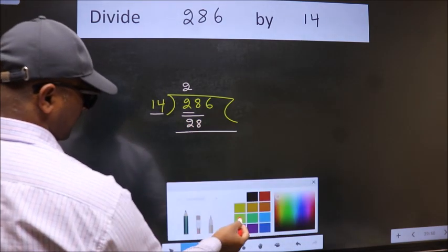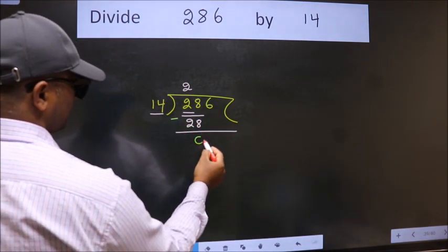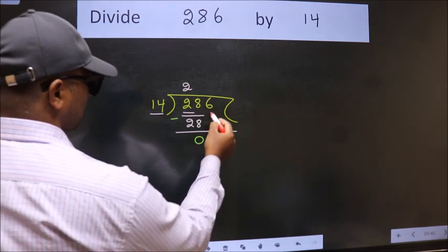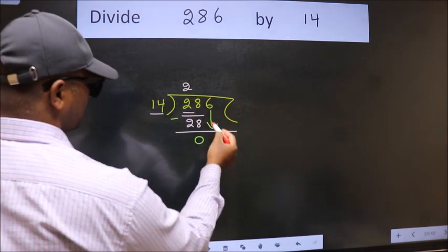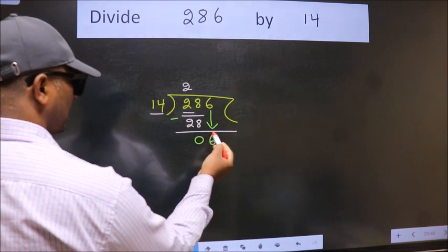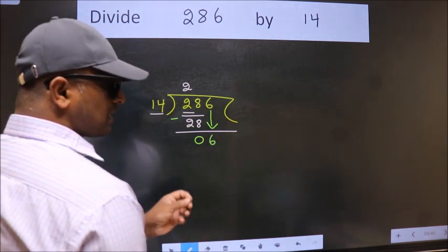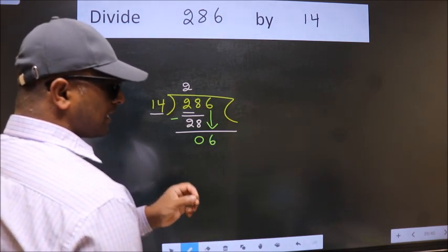Now we should subtract. We get 0. After this, bring down the beside number, so 6 down. After this step, the mistake happens and the mistake is this.